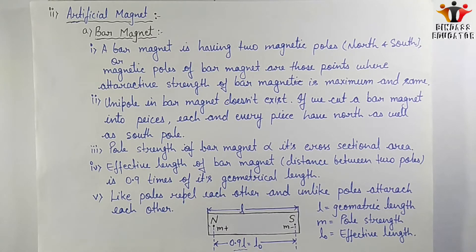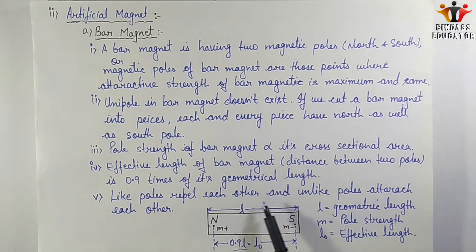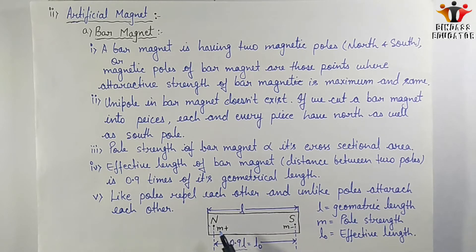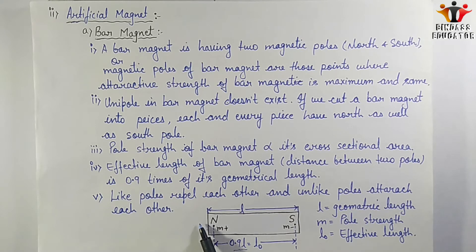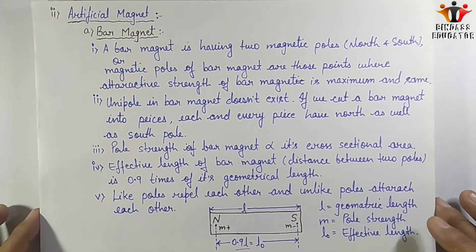The geometrical length is the full length from one end to the other. The effective length is the distance between the north and south poles, which are slightly inward from the ends. That distance is 0.9 times the geometrical length. Also, like poles repel each other and unlike poles attract each other — north and south attract, south and north attract.